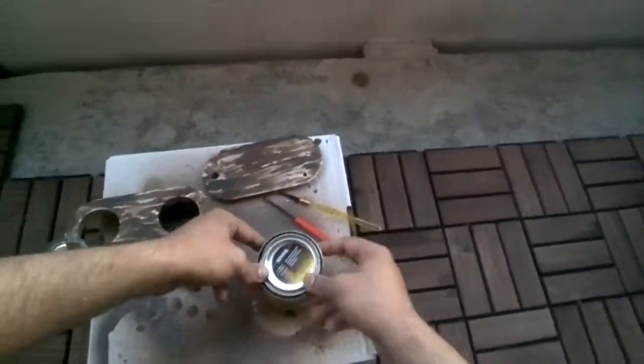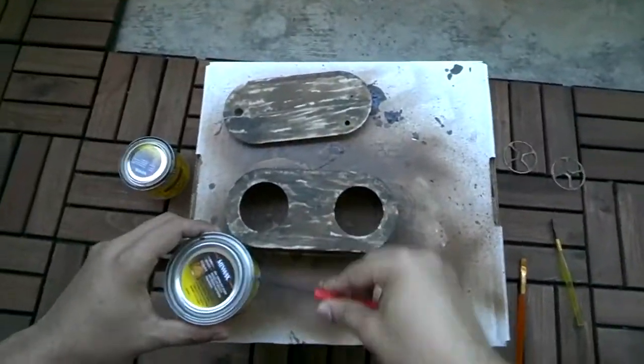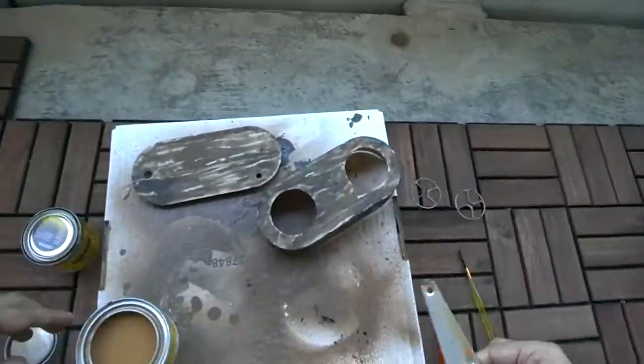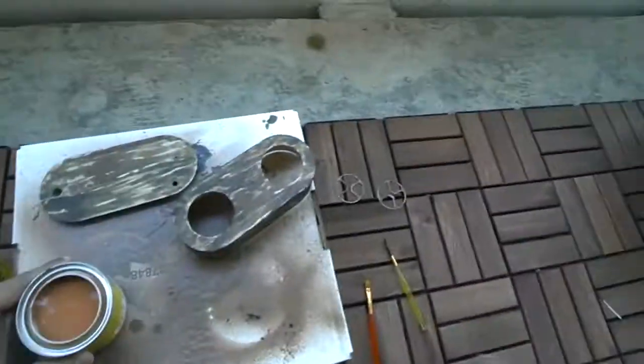Now once you're done with this stain, you would have to keep the part to dry for about four to five hours before getting to the lighter stain as you see here.